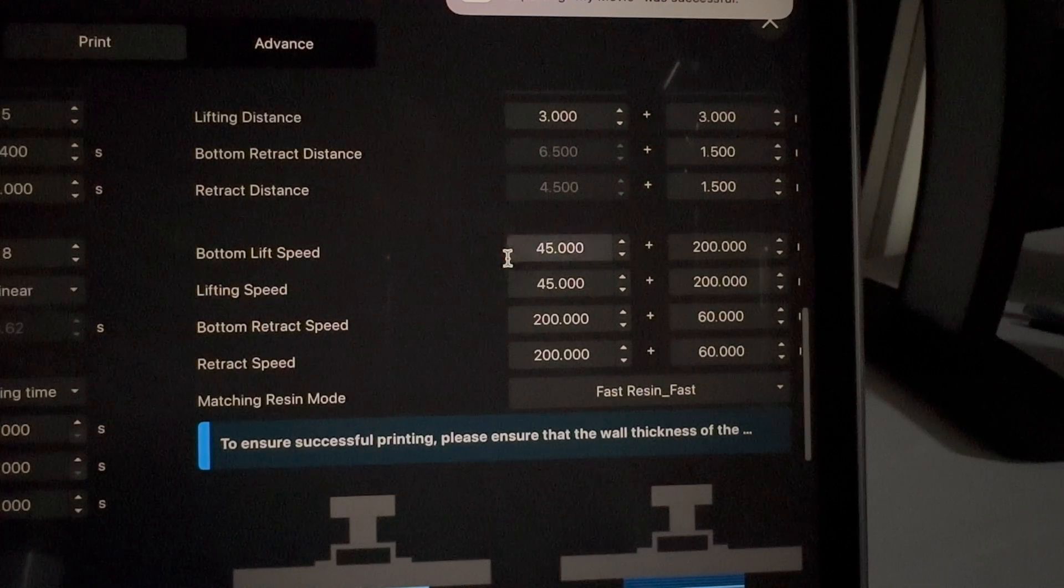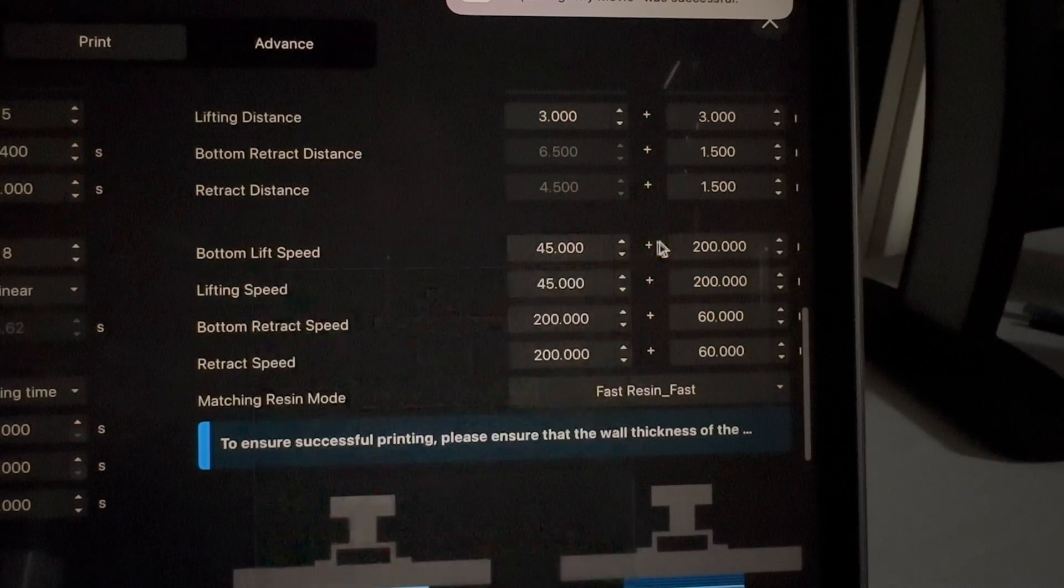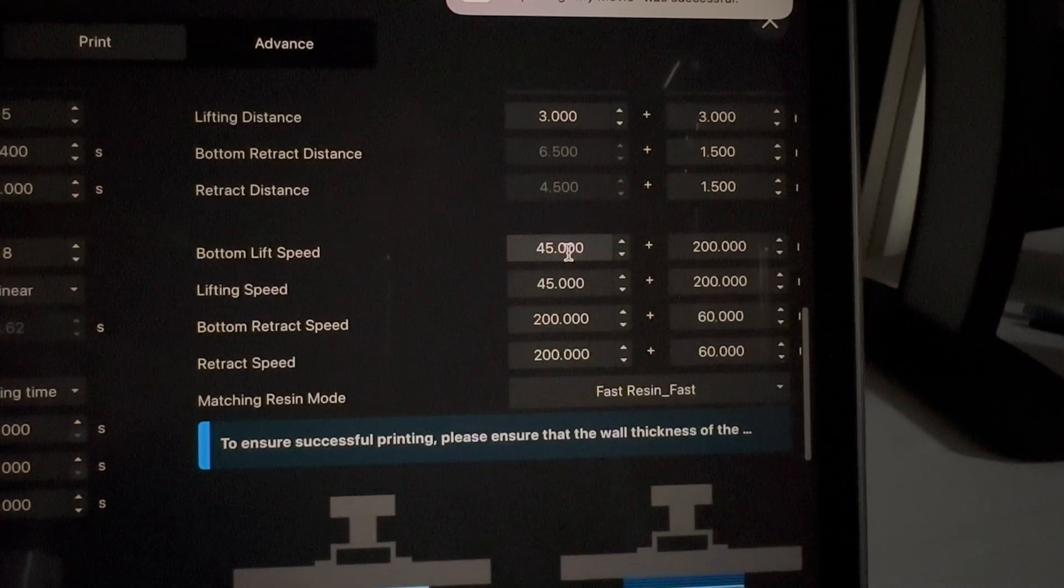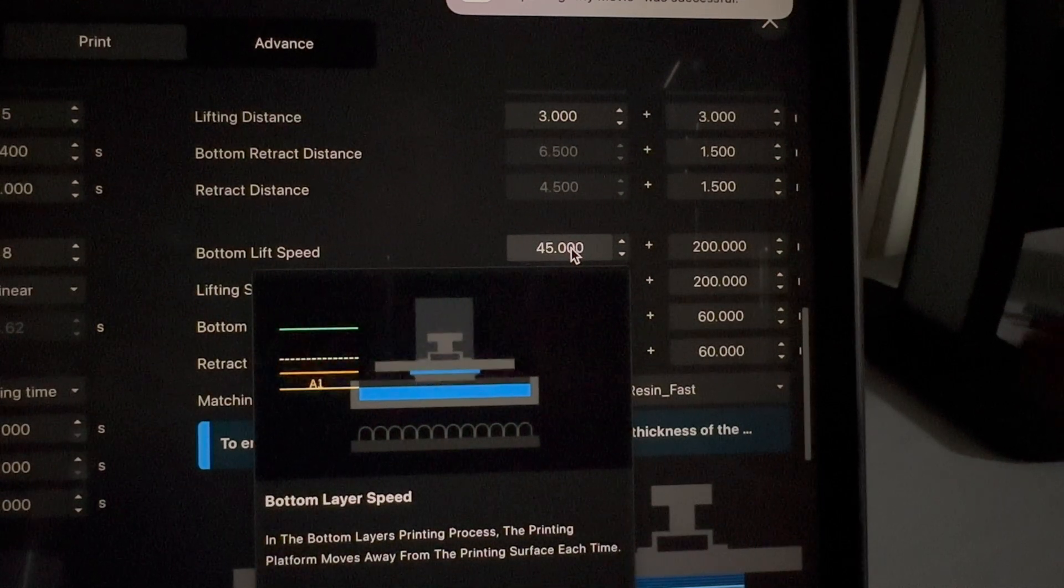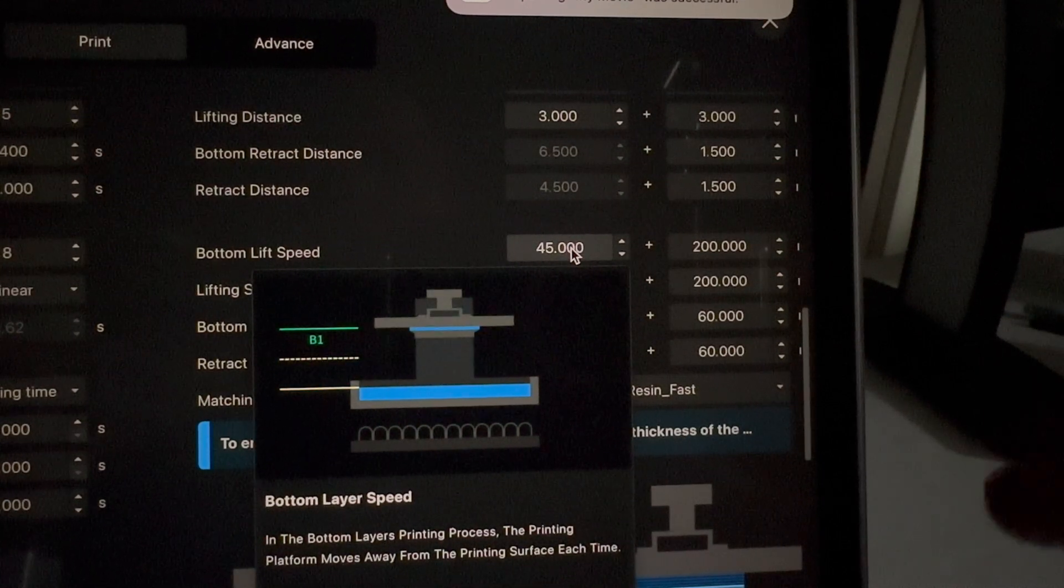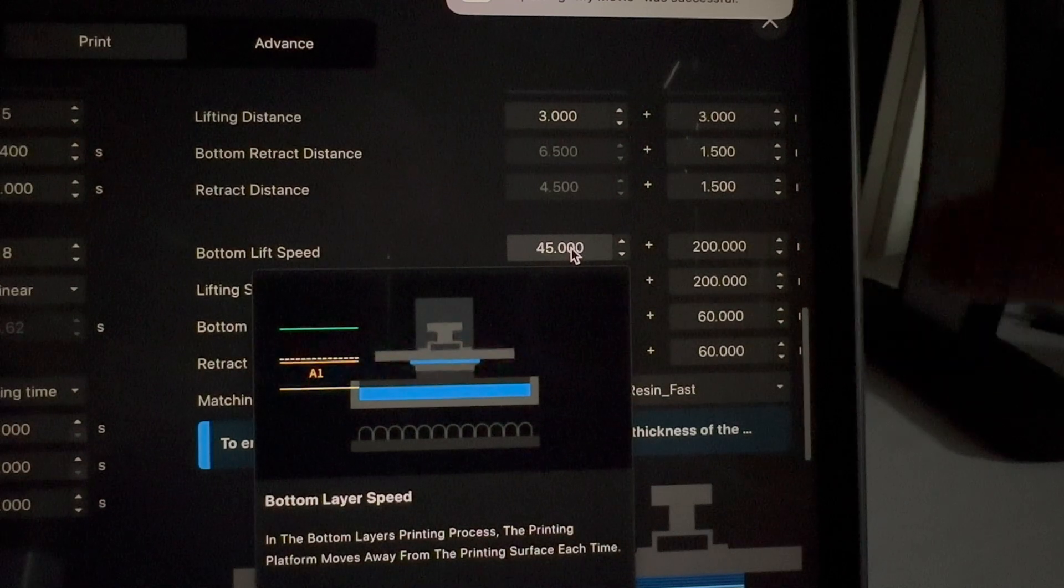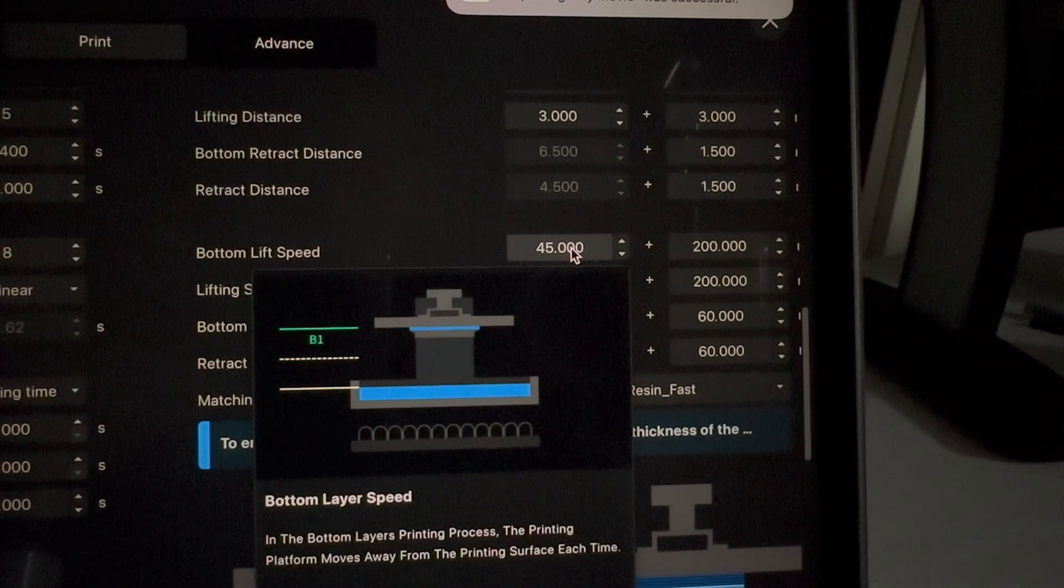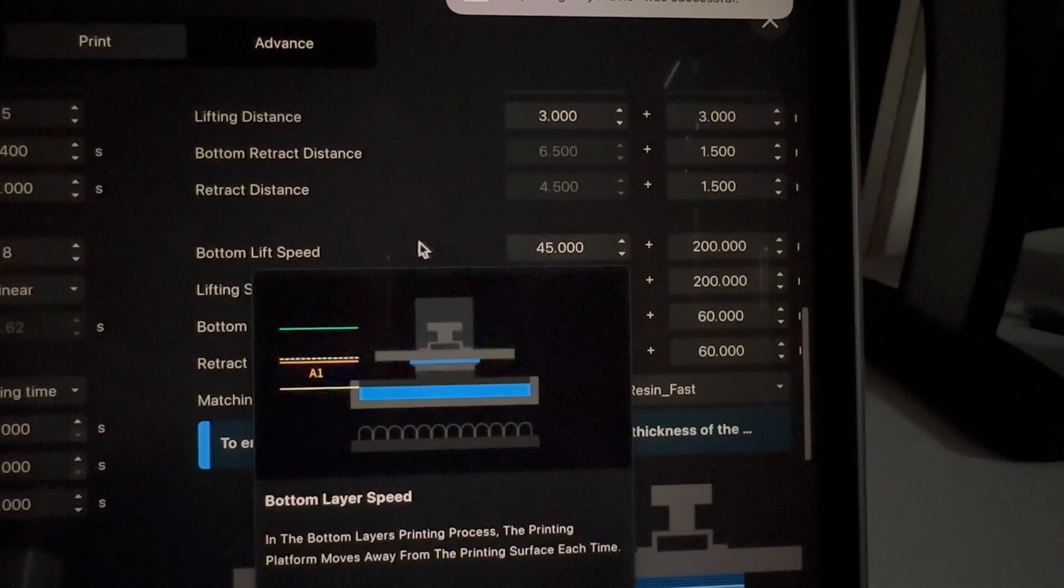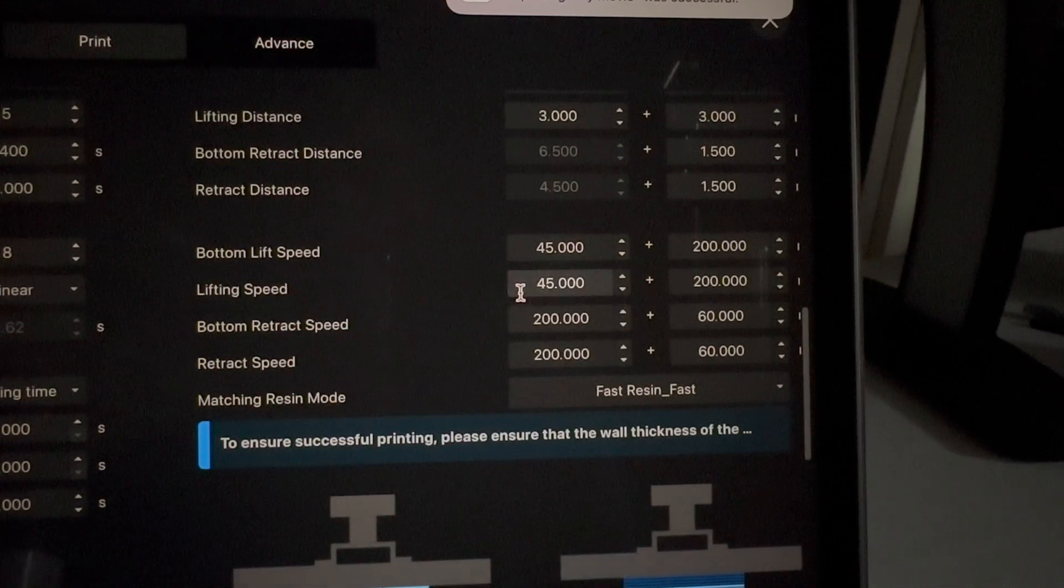Bottom lift speed 45 which is a slow pull and then going to a fast. So it goes 45 millimeters per minute for the first little bit when it pulls it off of the thing and then quickly moves up because there's no reason to take your time after that. Same with the lifting speed.